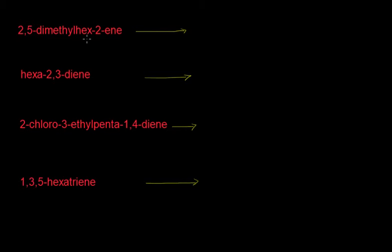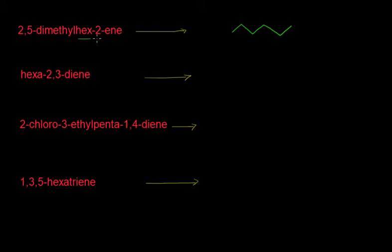This means that the total number of carbon atoms is 6, because 'hex' is there. Let me draw the 6 carbon atoms: 1, 2, 3, 4, 5, and 6. We have the carbon-carbon double bond at position number 2.